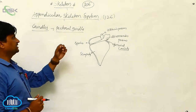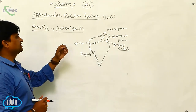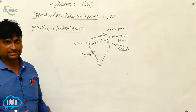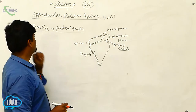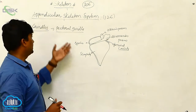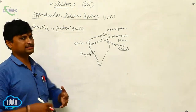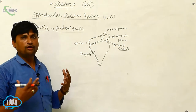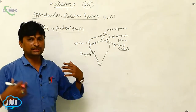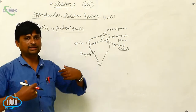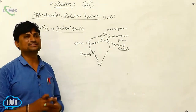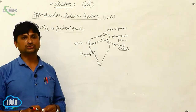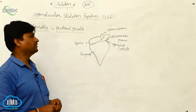After completing the appendicular skeletal system and limbs, we are going to discuss about the girdles. There are two girdles in the human body: the pectoral girdle, which is in the thoracic area where the forelimbs are articulated, and the pelvic girdle.